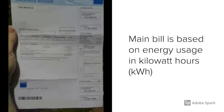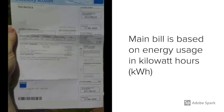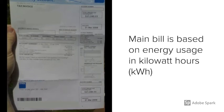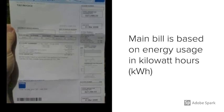Currently, residential customers' electricity bills are mainly based on usage, such as kilowatt hours per three months in Queensland, Australia.